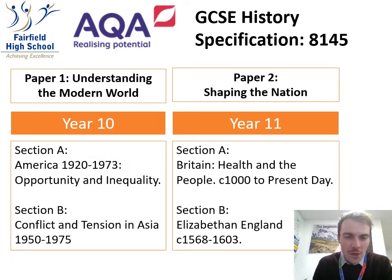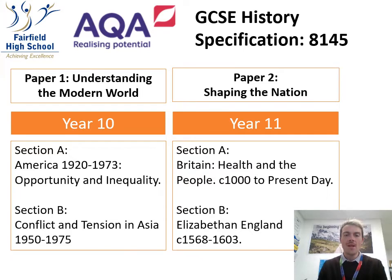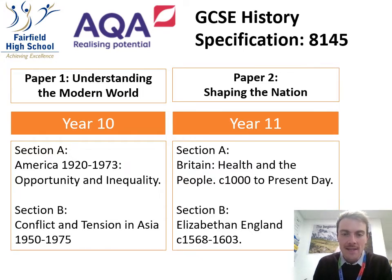Paper two we usually begin studying towards the end of year 10 and the beginning of year 11. Paper two is called Shaping the Nation, and again it's split into two sections. Section A is called Britain, Health and the People — a 1,000-year study of medicine and public health in Britain. Section B is Elizabethan England, a study of Queen Elizabeth I's reign in Tudor times.